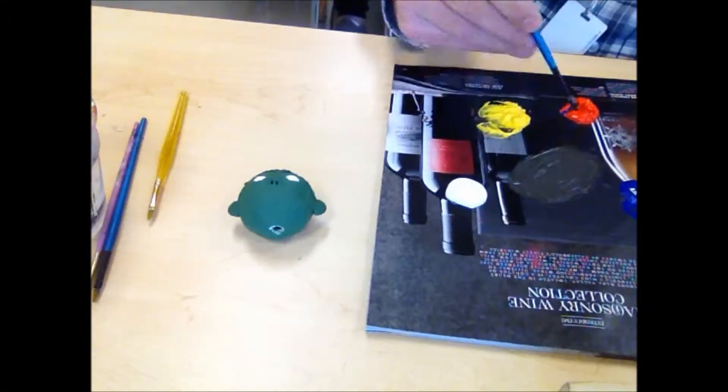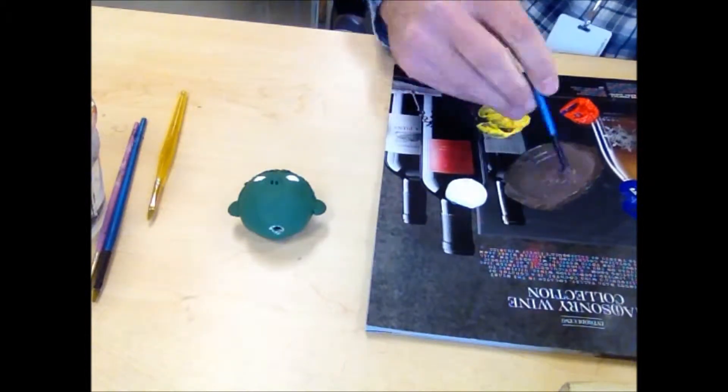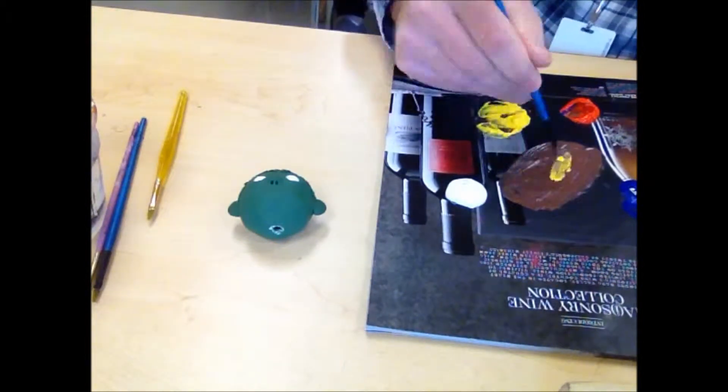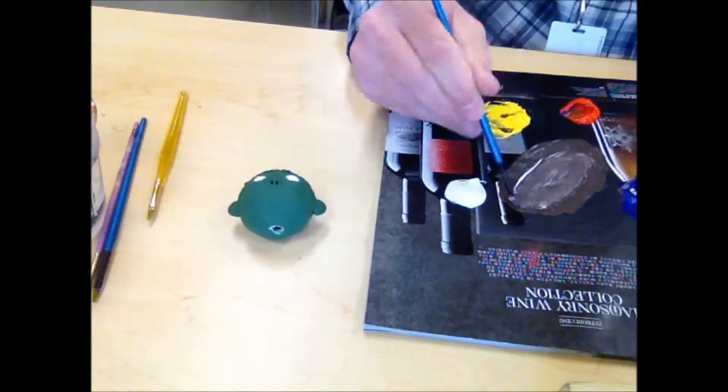So today I'm going to show you how to paint a stop-motion head made out of Sculpey with bead eyes. If you're not sure how to make one of these, check out my other video, how to make and build a stop-motion head.